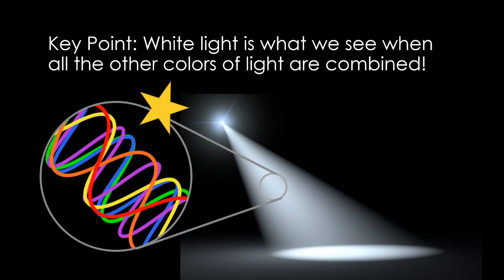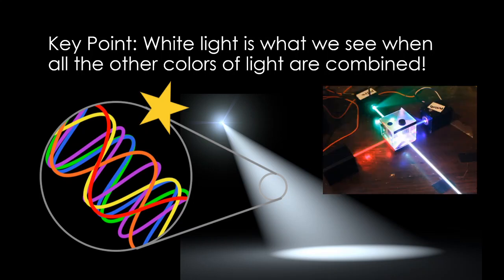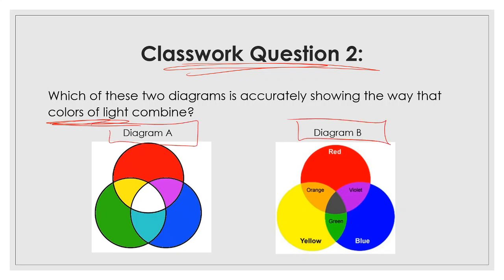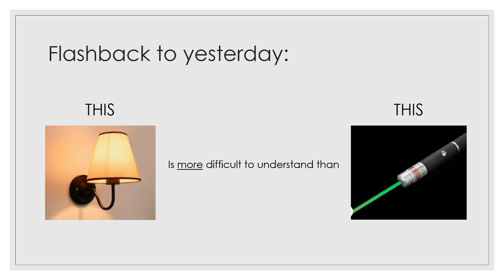Now, we learned that by talking about laser beams, but it's actually not true just for laser beams. It's true for all of the regular light, the regular white light that you see around you from the lamps and from the sunlight. Before we move on, I want to hit classwork question two. Make sure we're on the same page about this. Which of these two diagrams is accurately showing the way that colors of light combine? Should answer your question two, multiple choice. Right now, is it diagram A or diagram B? Pause the video. The correct answer is that diagram A. I know that because when all the three colors combine, it makes white light. Unlike paint, where the three colors combine makes black or brown.